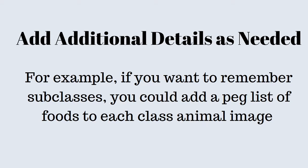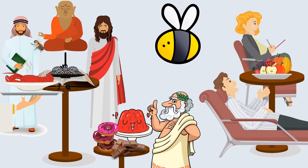If you want to remember subclasses, you could add an additional peg list. For example, let's say we want to use foods as the second layer. Here we have the B's, which represent three subjects. To remember which letters go with each subject, we can add foods.